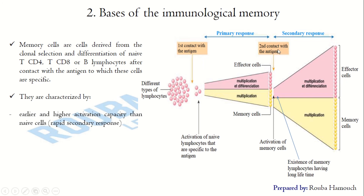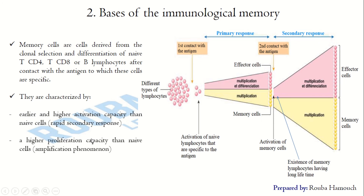Following the second contact with the same antigen, the memory cells produced during the primary response differentiate into effector cells and new memory cells. We have much more effector cells and memory cells during the secondary response, a higher proliferation capacity than naive cells, and a higher capacity for self-renewal and preservation of memory cells for many years. So the secondary immune response is more rapid, more amplified, and more durable than the primary response.